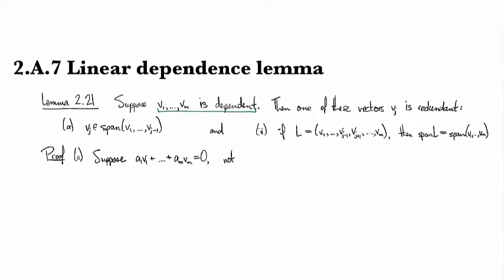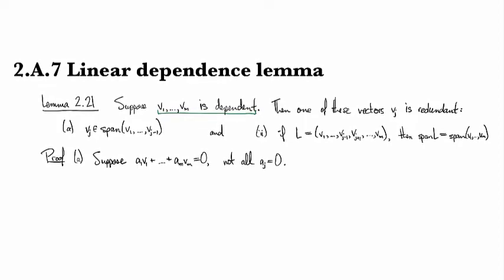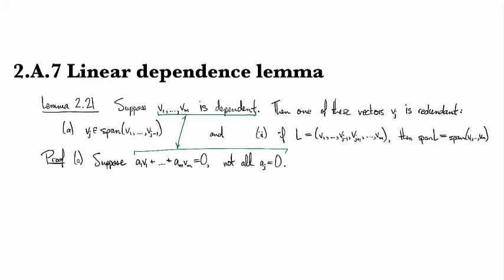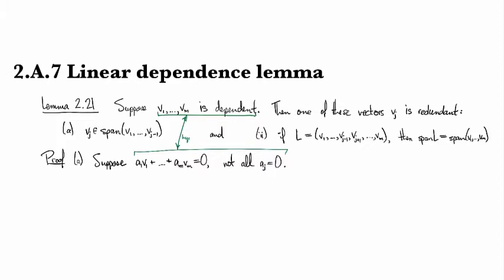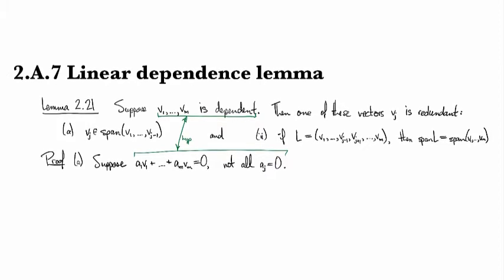What that means is we can assume we've got some scalars a_j where we have this representation of zero where not all the coefficients are equal to zero. This thing that I just wrote is exactly the invocation of that hypothesis.